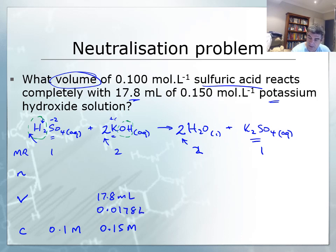My way of solving these is to go up, across, and down. I put my name on my CV: number of moles of potassium hydroxide equals concentration times volume. So 0.15 multiplied by 0.0178 gives me 2.67 times 10 to the minus 3 moles.